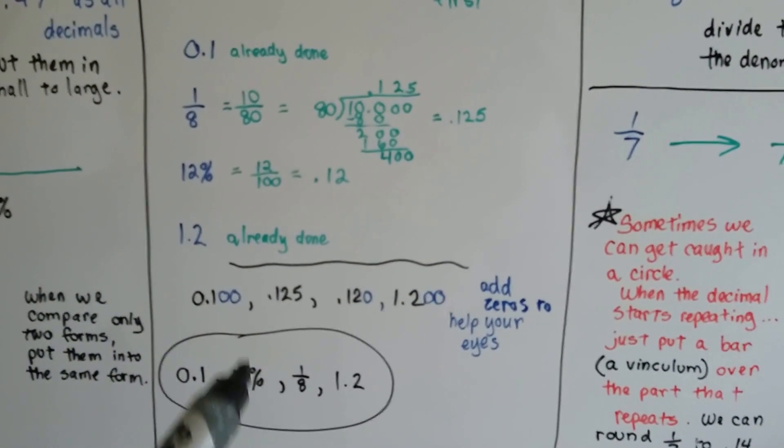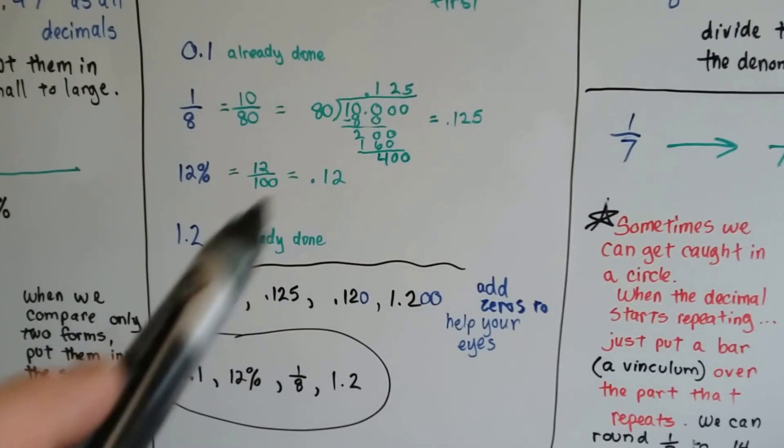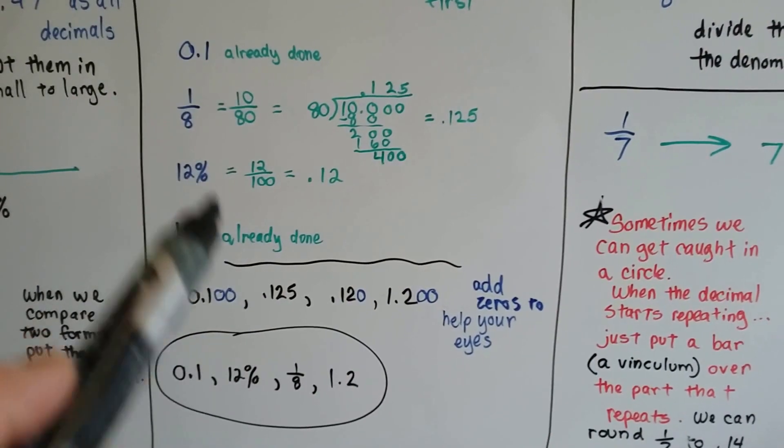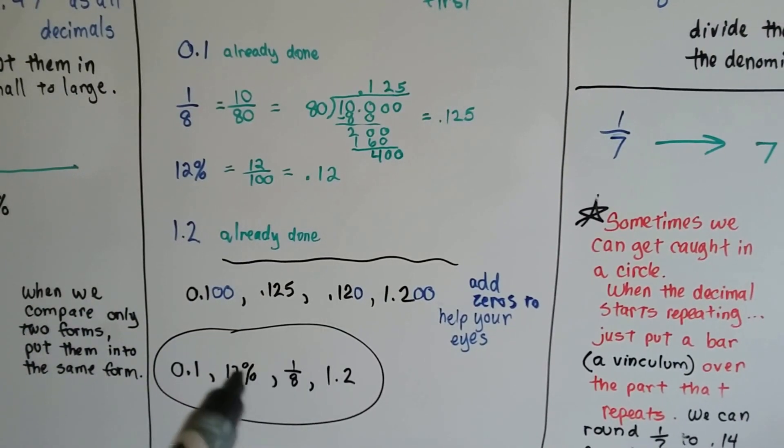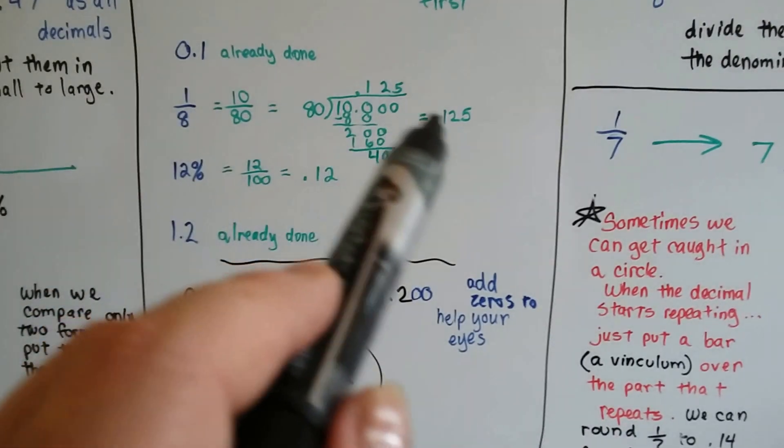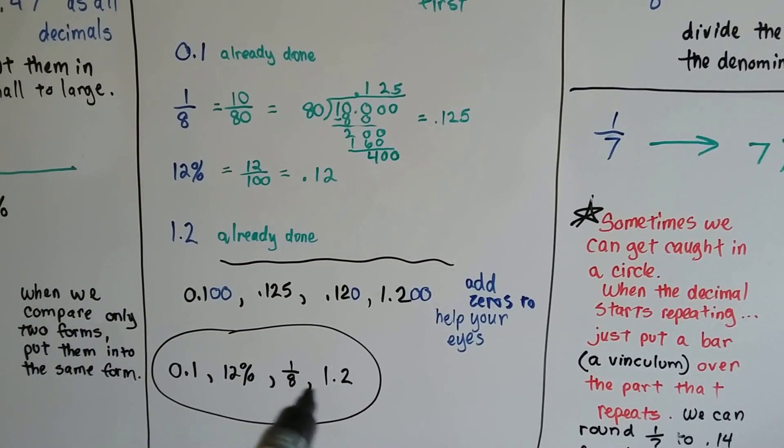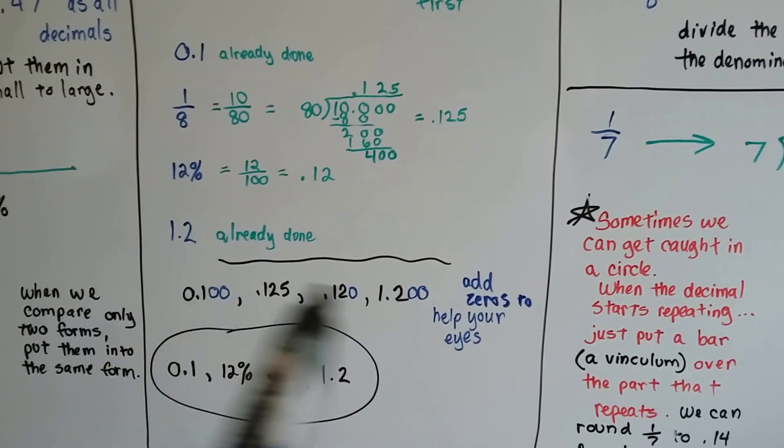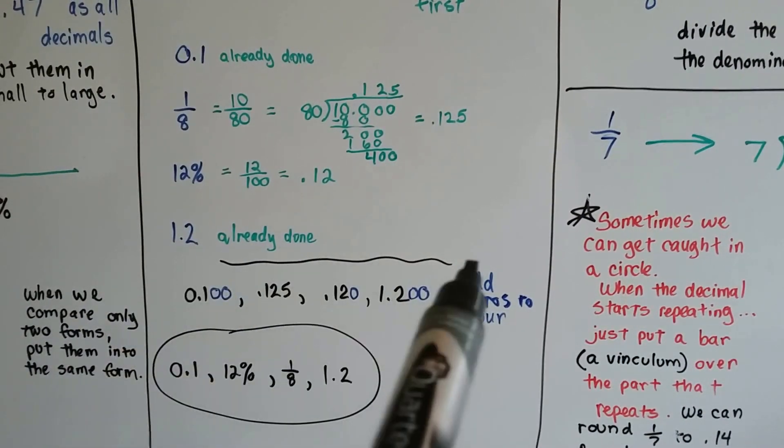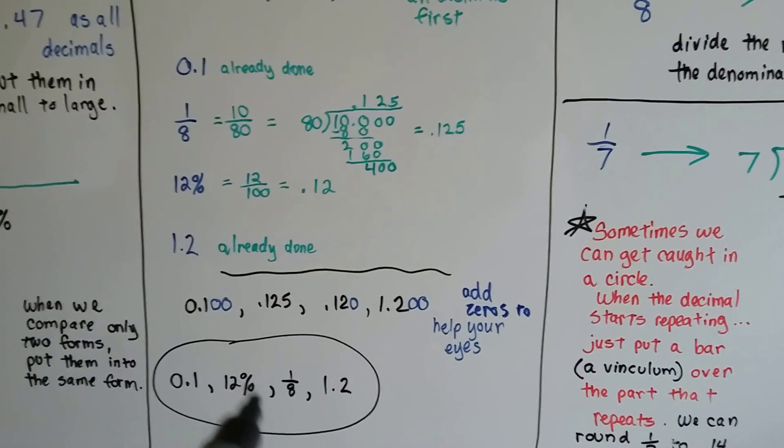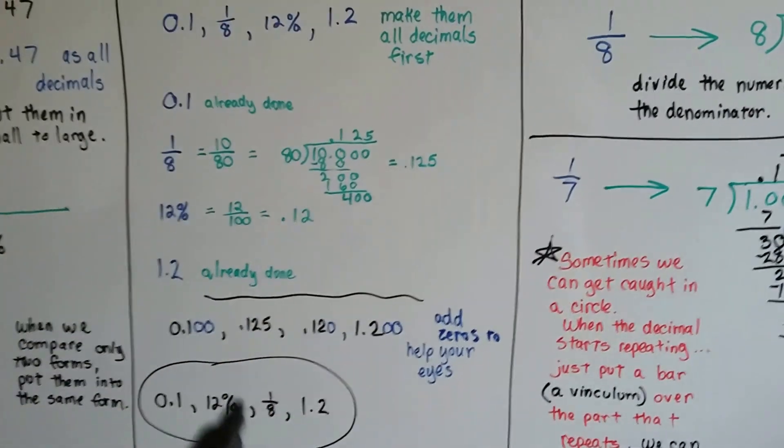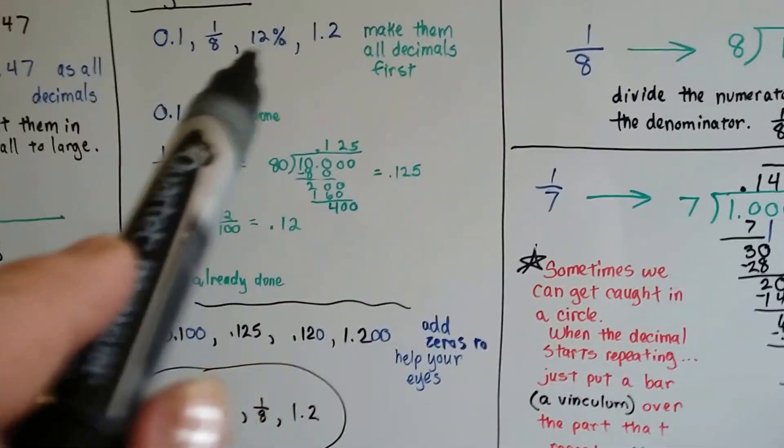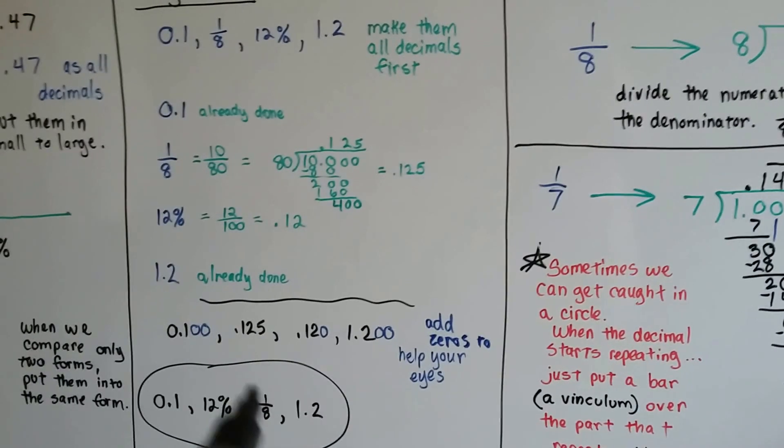Then I put them back to their original form. I know that this is going to be first, and that was written as 0.1. The 12% was .12. So that's the next one. The 1 eighth was .125, so I know that's the next one. And then the 1.2 was last. So you can't leave them in the order that you fixed them to try to find the order. You have to put them back to their original order. Because that's what it asked you to do is put these in order, not your converted ones.